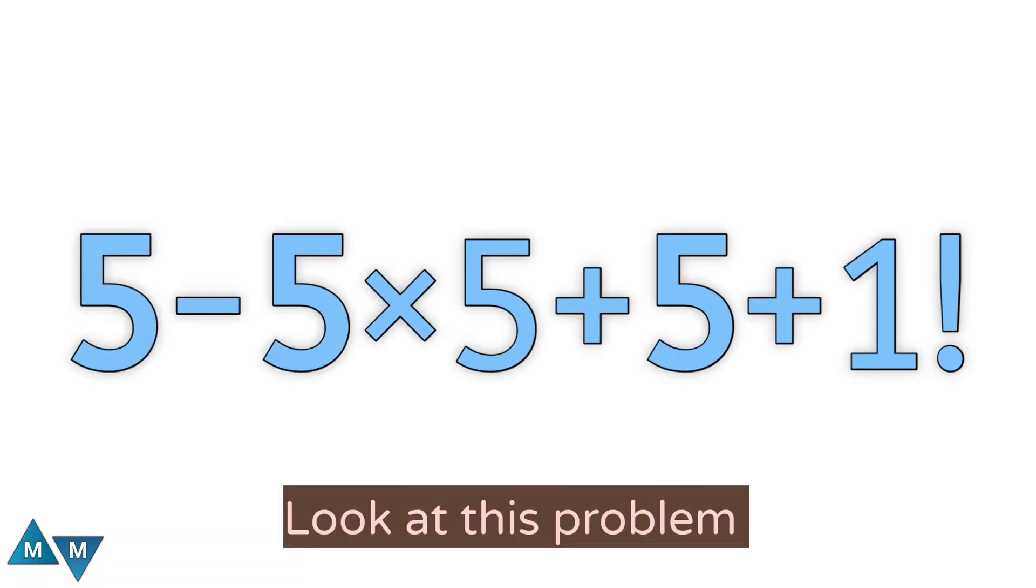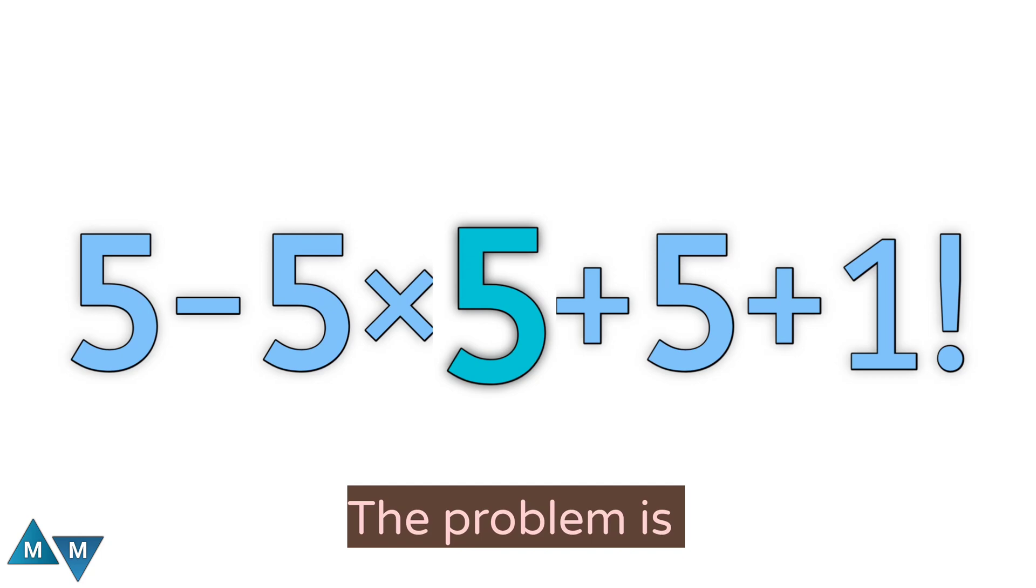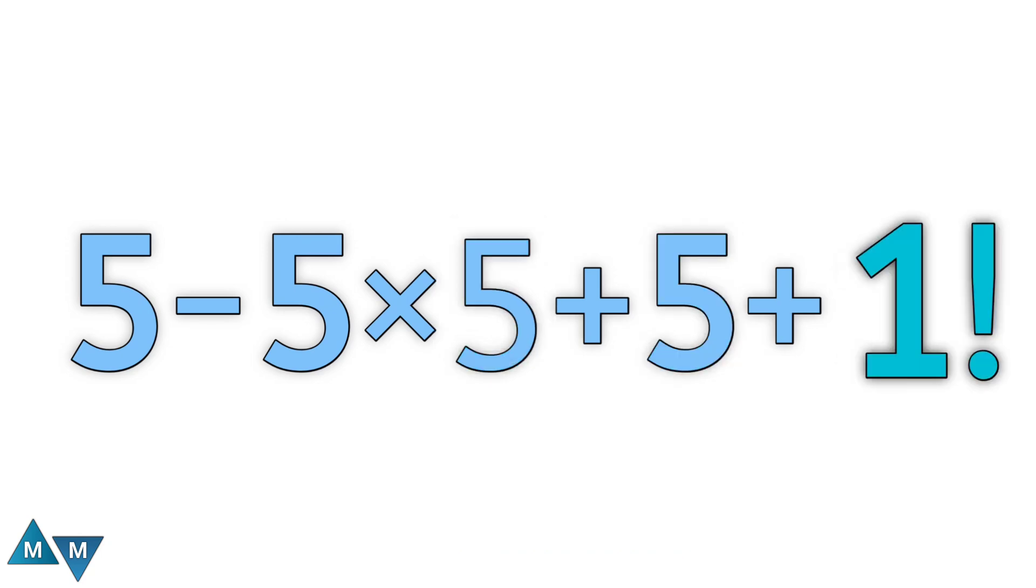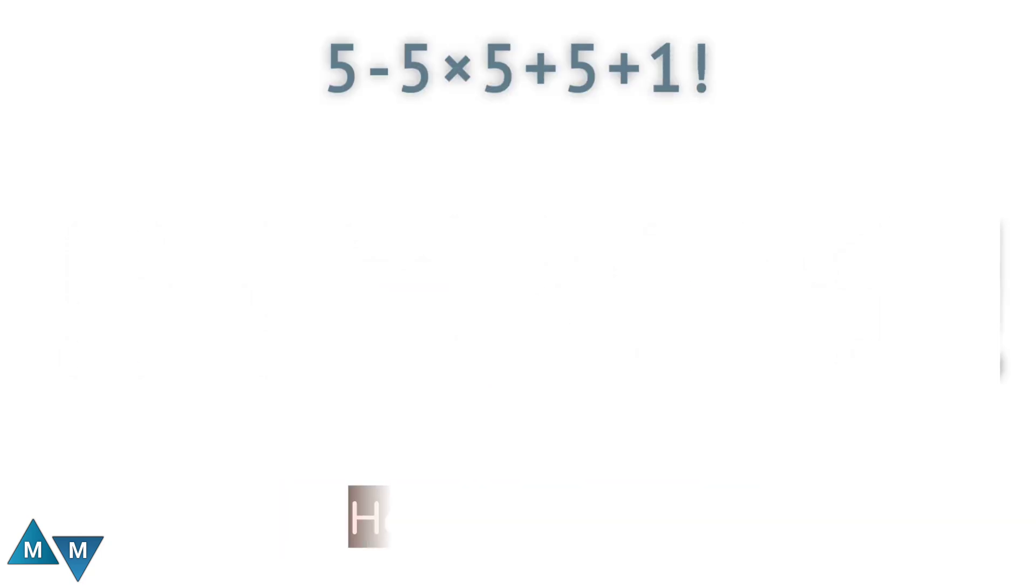Hi, guys. Look at this problem. The problem is 5 minus 5 times 5 plus 5 plus 1 factorial. Let's see step by step how to solve it.